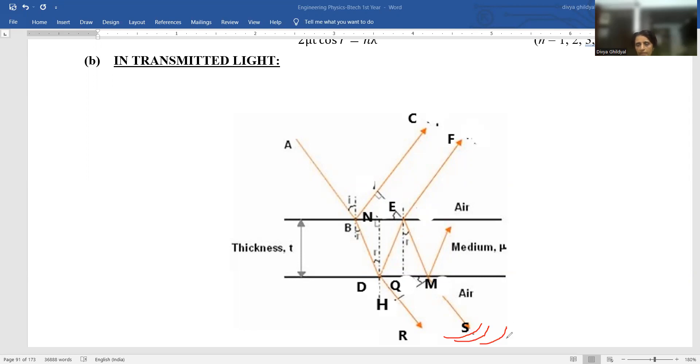Whatever maxima minima conditions we will be getting in transmitted will be complementary of what we got in the reflected case. And the step-by-step derivation is exactly similar to what we did in reflected light. Let us begin.